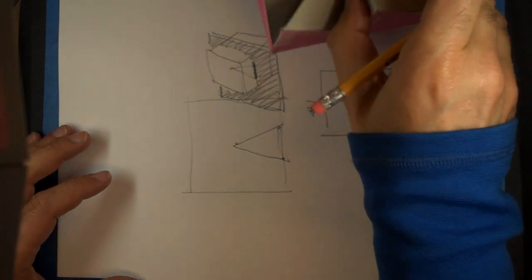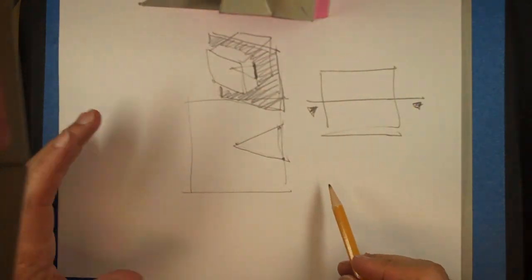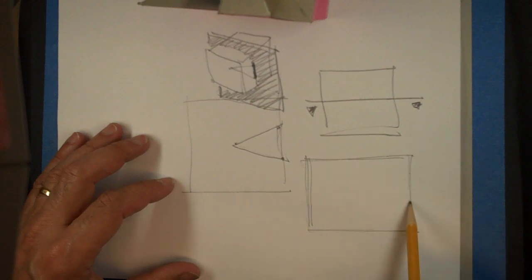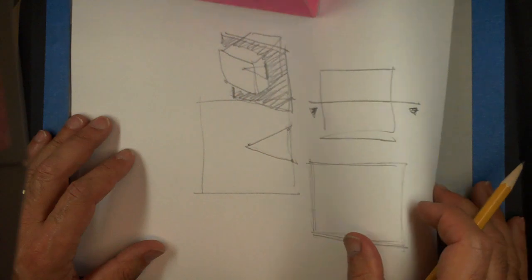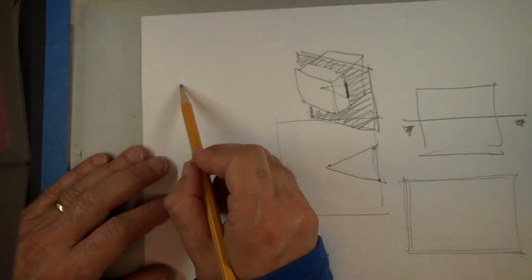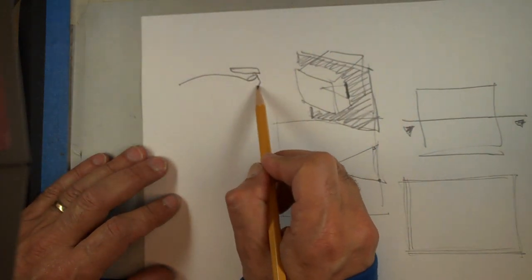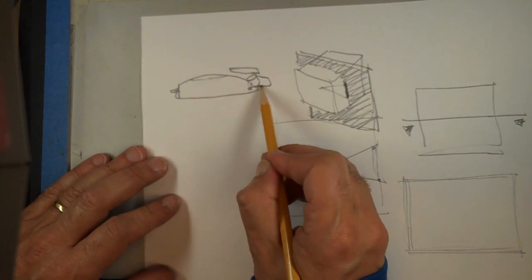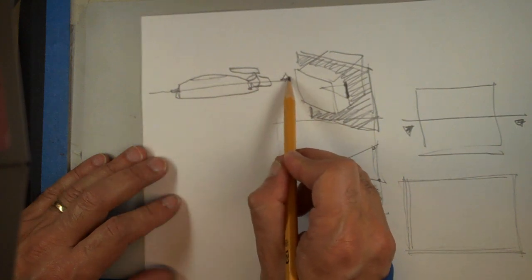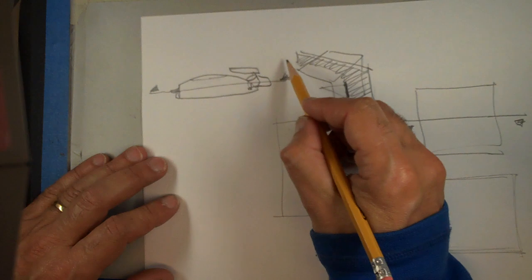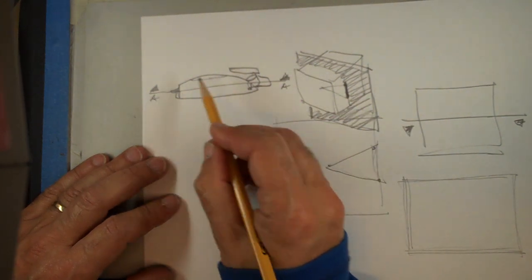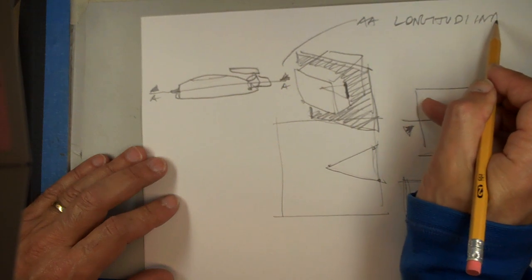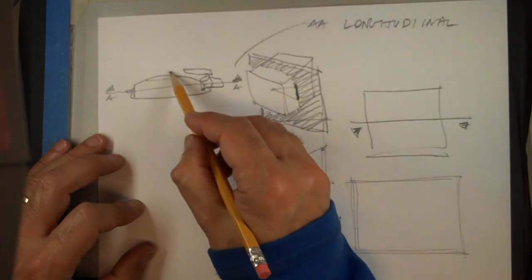Okay so maybe let's just say at least one section, maybe two if it's more interesting, if it gives more information. Again maybe if you have a pen or something you would have a longitudinal section let's say AA and then you would have a cross-section.